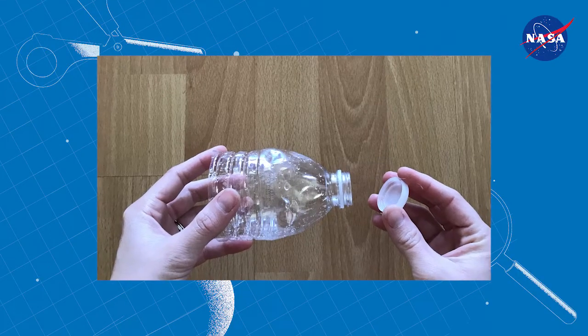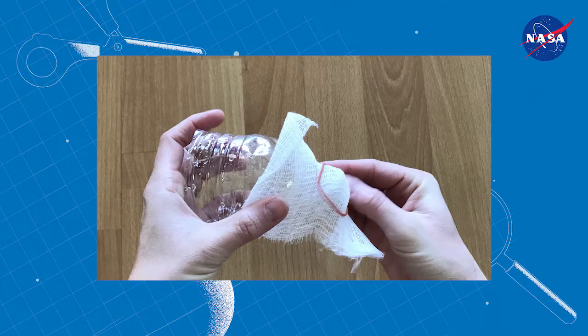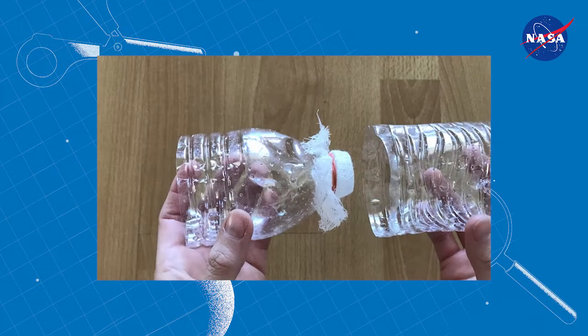I want to be able to keep my filter material in the top section, so I went to my first aid kit and grabbed a piece of gauze. Securing that with a rubber band will allow all of the material on the top to stay there, and the water to be cleaned to permeate to the bottom.